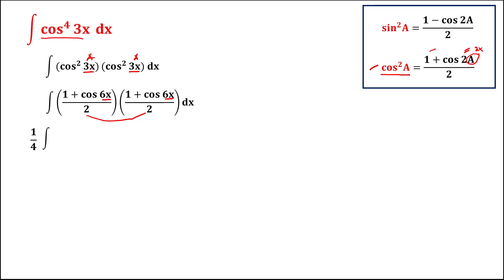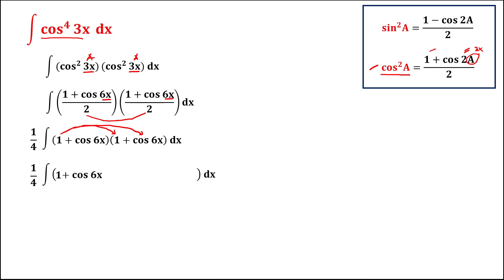We now have 1 over 4 times the integral of (1 plus cosine 6x) times (1 plus cosine 6x). Using the FOIL method: 1 times 1 is 1, then 1 times cosine 6x is cosine 6x, then cosine 6x times 1 is cosine 6x, and cosine 6x times cosine 6x is cosine squared 6x.